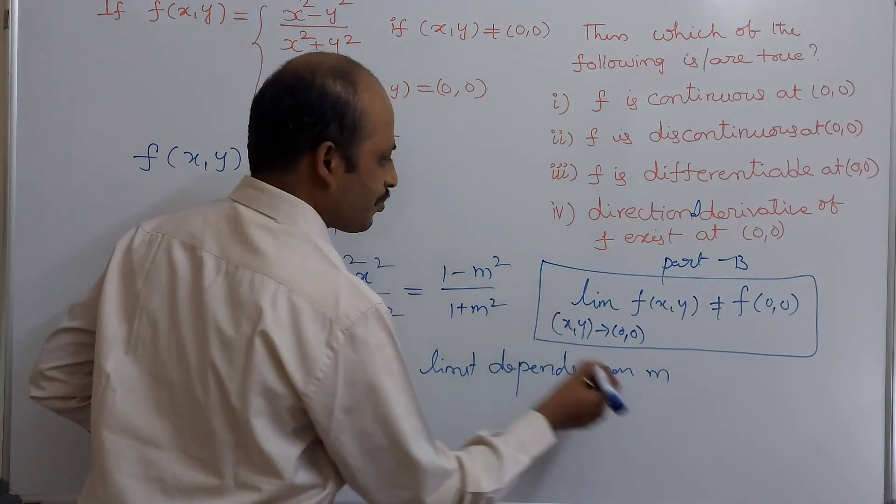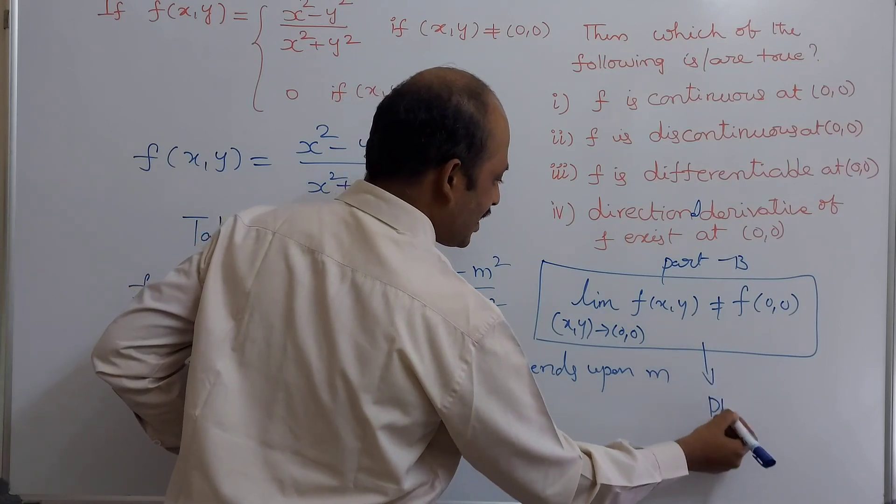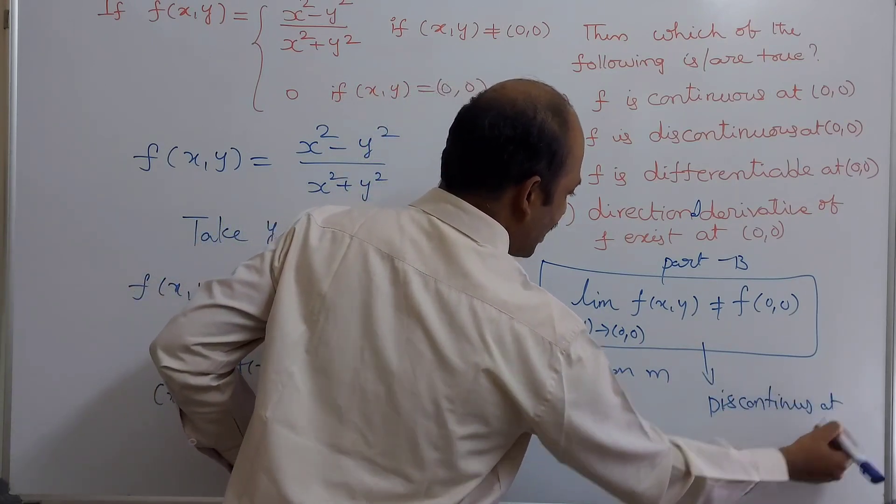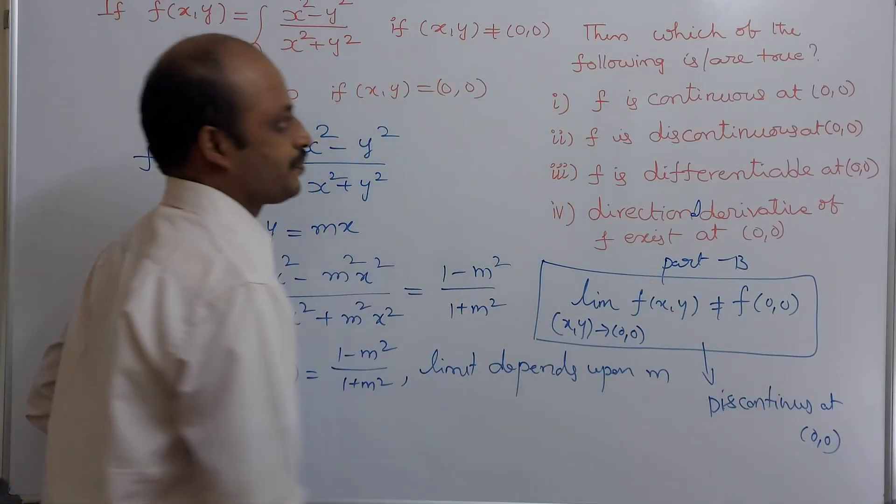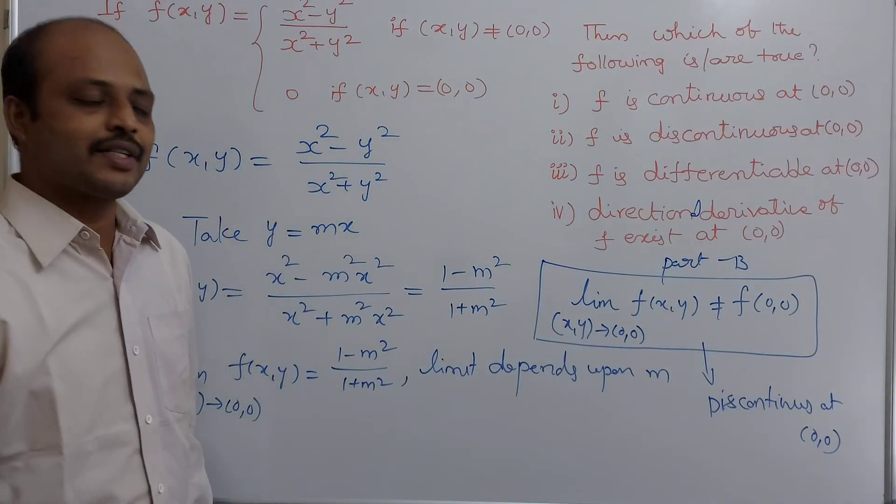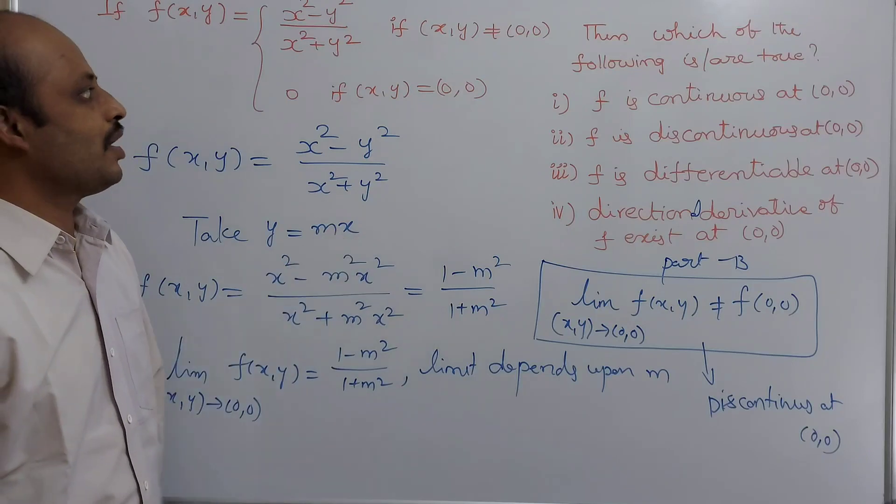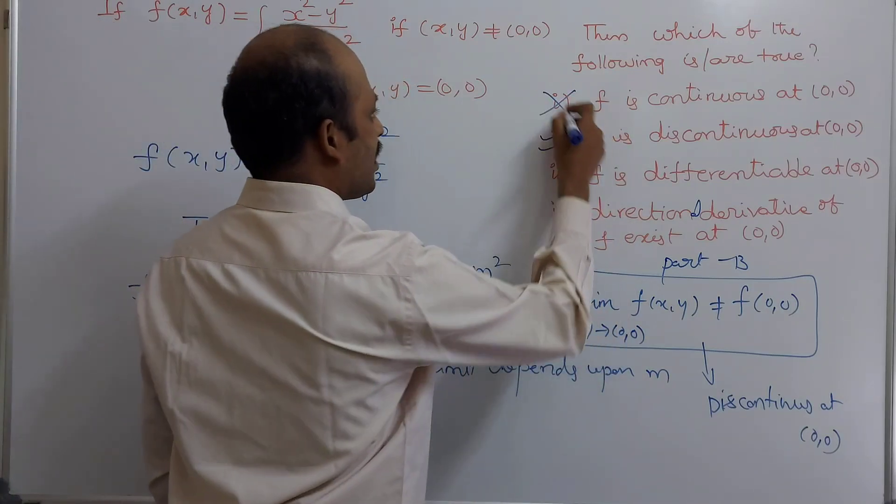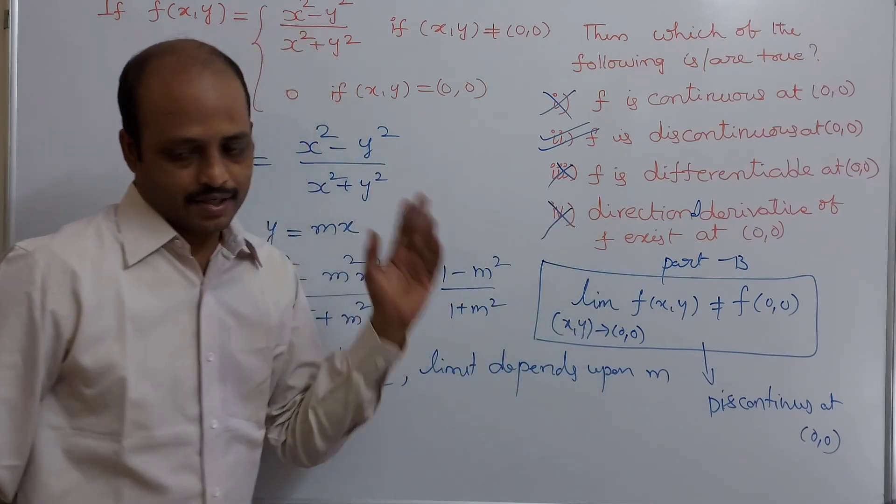So, this condition implies the function is discontinuous. The function is discontinuous at the point (0,0). The function is discontinuous at the point (0,0). Observe that. Option 2 is correct option and the remaining 3 options are wrong. Observe that.